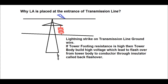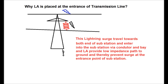If the transmission line tower footing resistance is high, then the tower body builds up high voltage, which leads to flashover from the tower body to the conductor through the insulator. This is called back flashover. This lightning surge then travels towards both ends of the substation and enters the substation by the conductor. LA is provided at the entrance of any bay so that the lightning arrester provides a low impedance path for any overvoltage, thereby protecting the substation equipment.